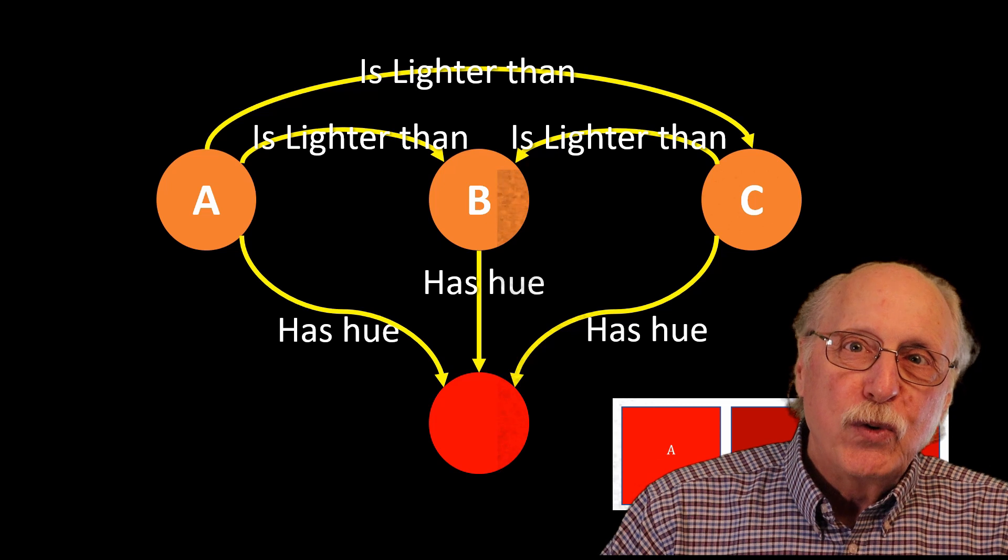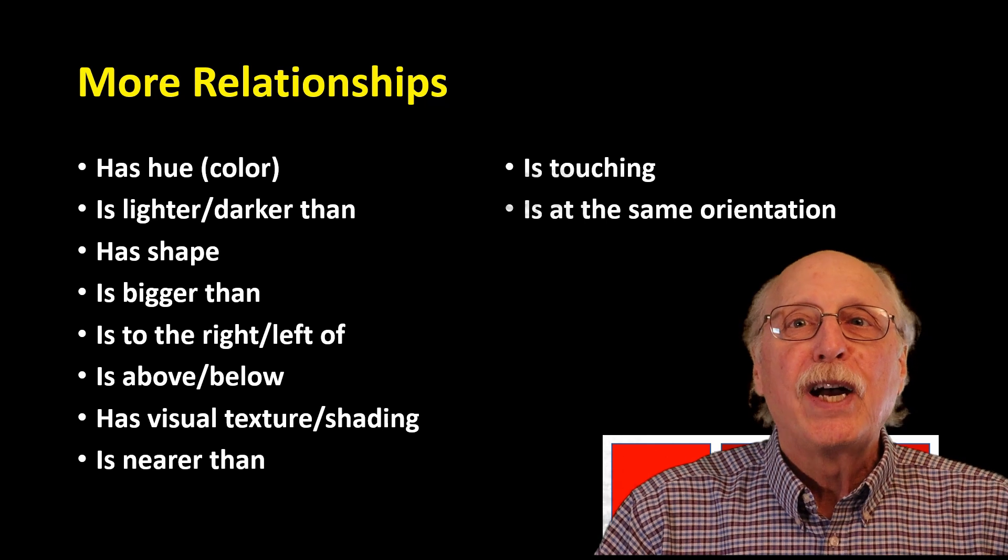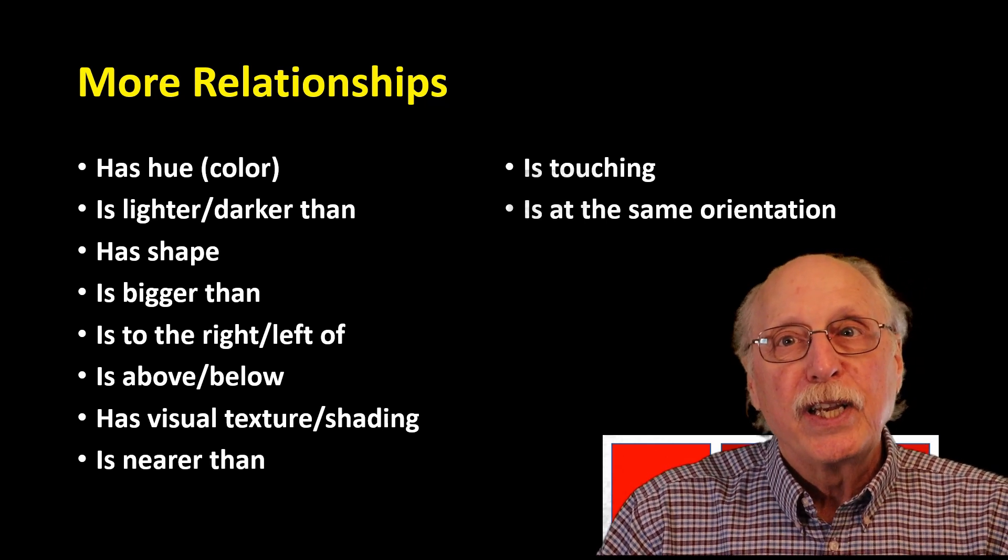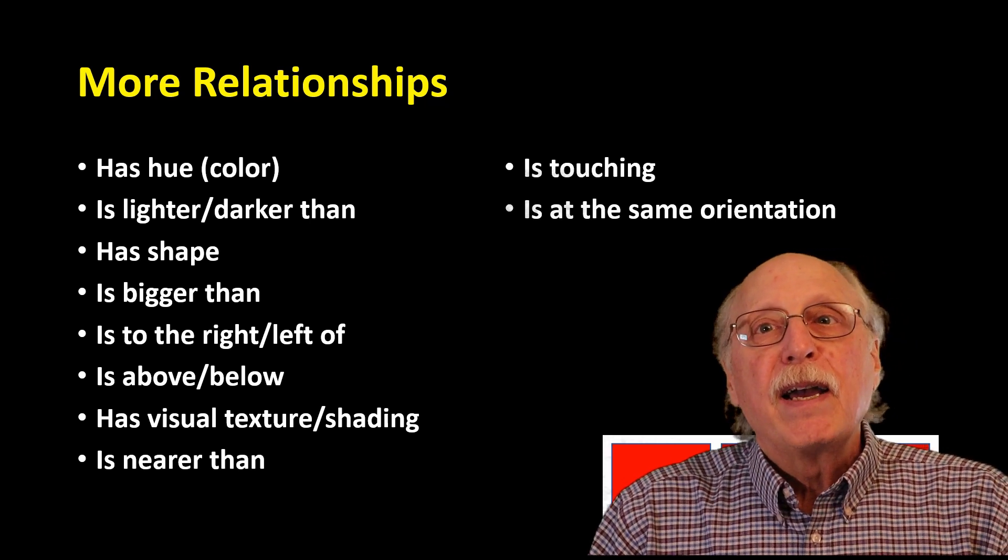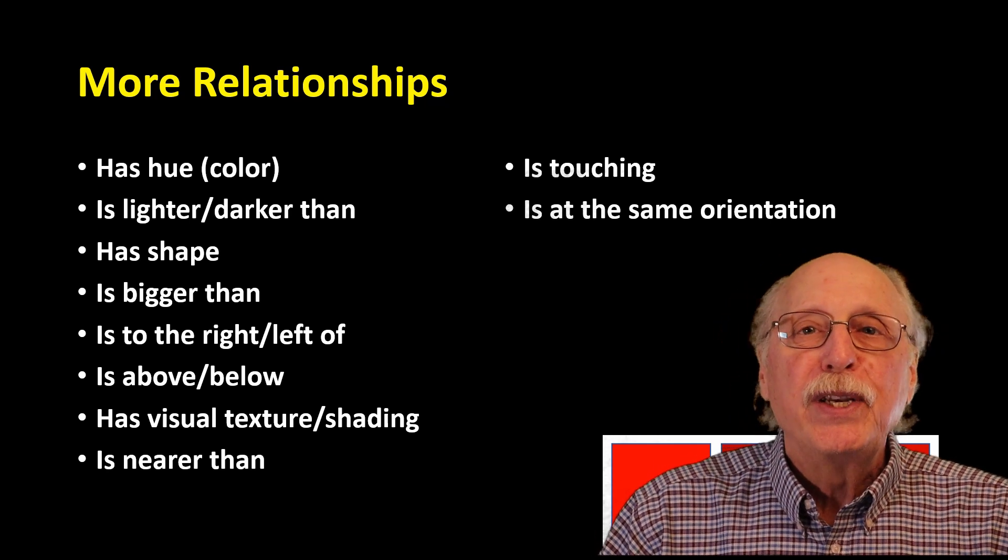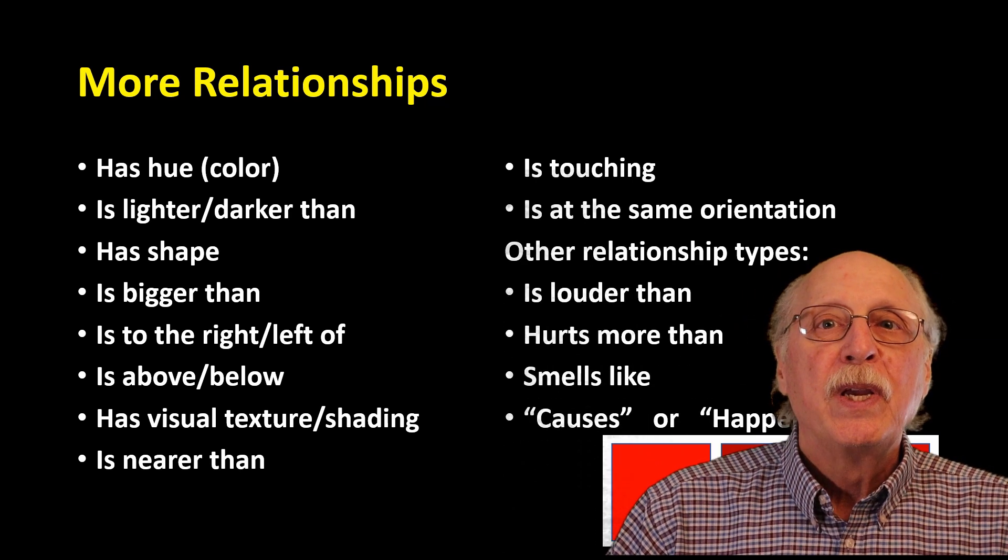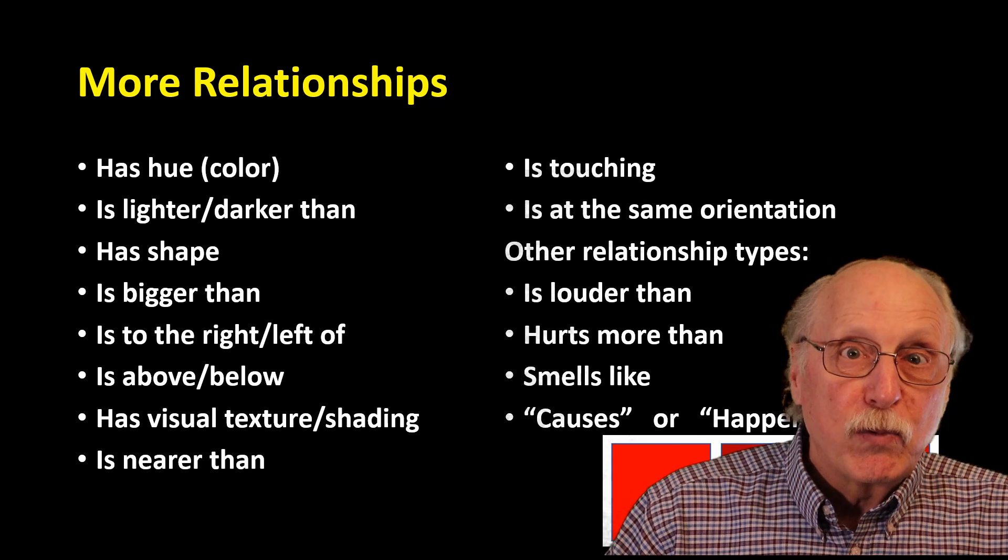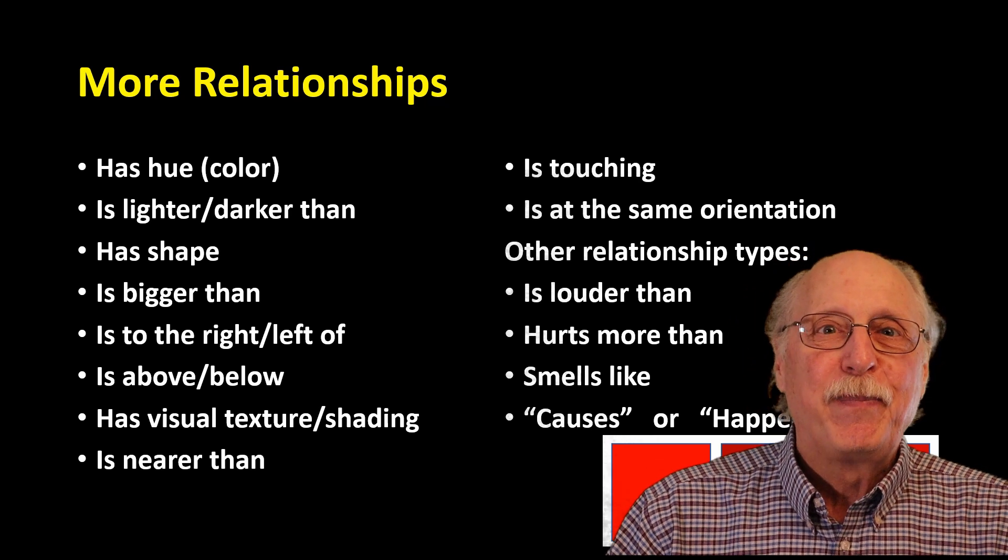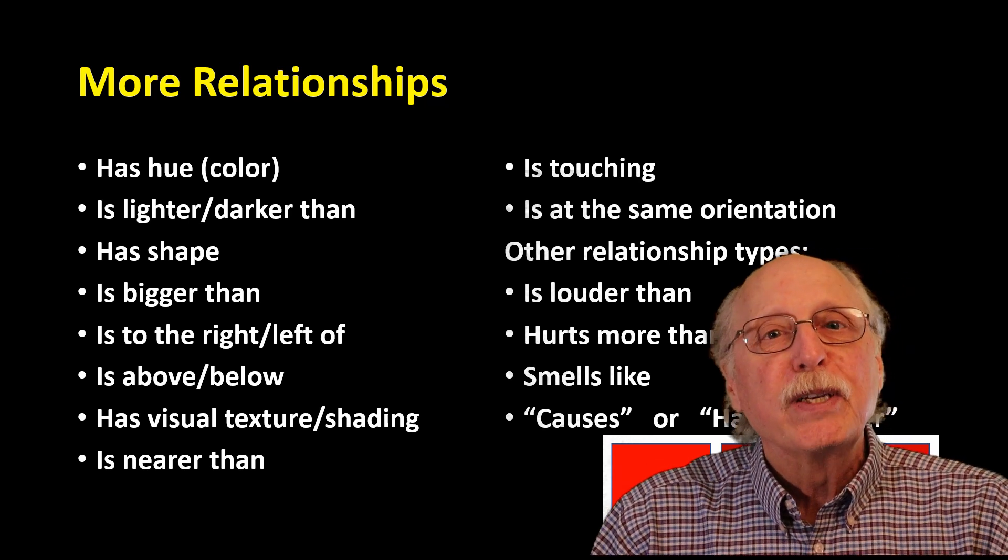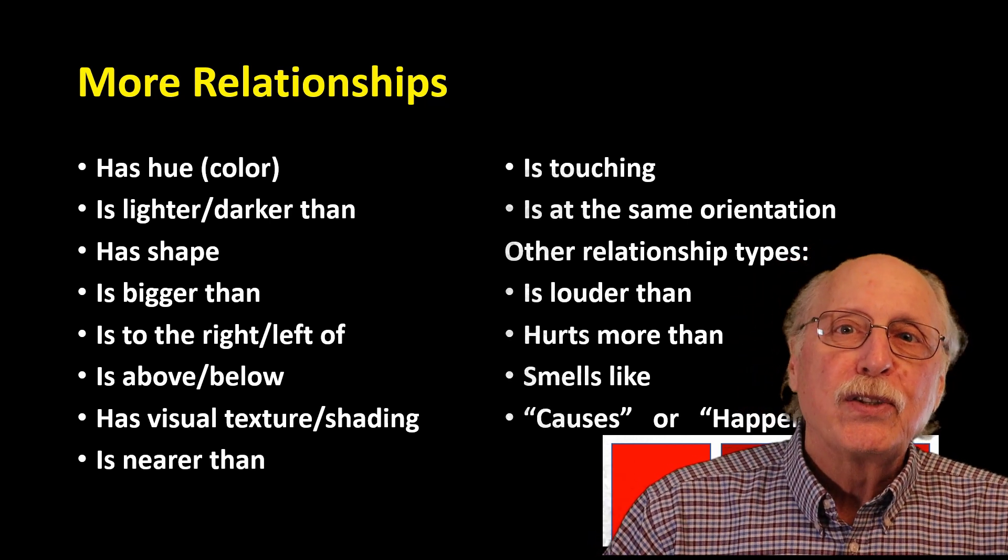While we've just started with these two relationships, hue and brightness, there are numerous others which would be applicable to an object in your visual field. Objects can have shape, they might be bigger or smaller than each other. They might have some visual texture or shading or be nearer or further. They might be touching or have a differing orientation. There are also relationship types related to other senses like louder than, or hurts more, or smells like. Then there are even more complex relationships like causes or happens, which are essential to AGI.